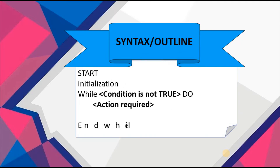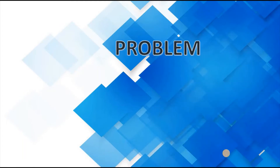In this example we have our terminal start, where we start our program. This is followed by our initialization, where we have a default value being assigned to a variable location, followed by the keyword 'while', which indicates that we are now performing the while loop. This indicates that while a condition is not true, we would do a set of actions, and once the actions have been performed we proceed to end our while loop.